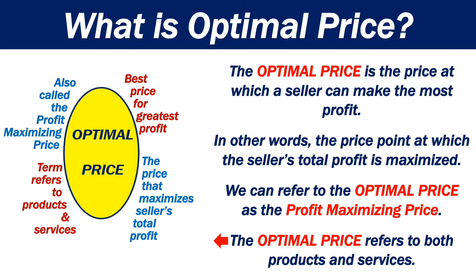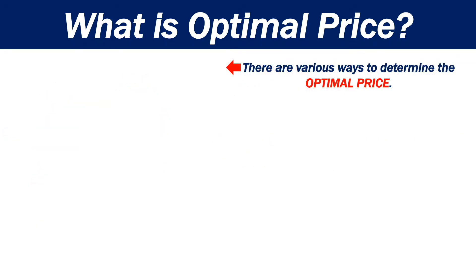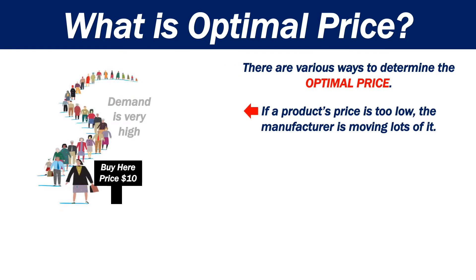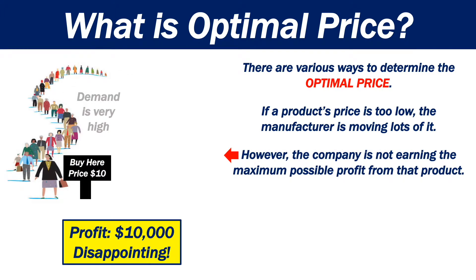The optimal price refers to both products and services. There are various ways to determine the optimal price. If a product's price is too low, the manufacturer is moving lots of it. However, the company is not earning the maximum possible profit from that product.